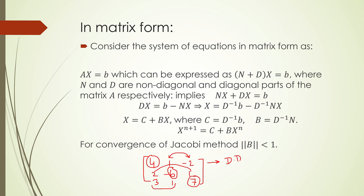Instead of checking whether the norm of B is less than 1, you simply check the coefficient matrix A. If A is diagonally dominant, then the iteration matrix norm must be less than 1. If the condition is not satisfied, the Jacobi method will not converge. If the system is not diagonally dominant, you can use row operations or interchange equations to make it diagonally dominant.